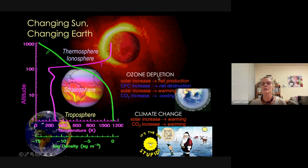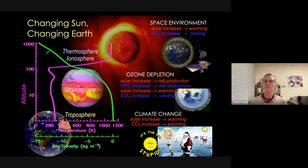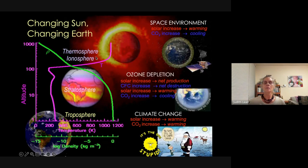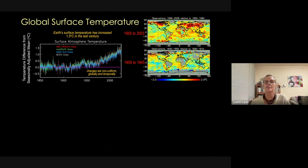At the same time, increasing CO2 causes cooling in the stratosphere — because by the time CO2 reaches the stratosphere there's no overlying atmosphere to trap the radiation. So ozone depletion involves solar variability, CFCs, and greenhouse gases together. Moving into the space environment: the solar UV and extreme UV increase warms the thermosphere by a large amount — the solar cycle adds a factor of two or more — while CO2 actually cools the thermosphere.